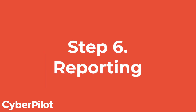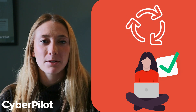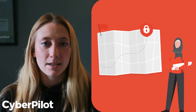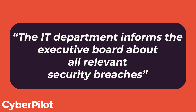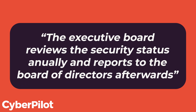Step six: reporting. Establishing a clear reporting process for security issues is key to ensuring the safety of your organization's data. By having a proper reporting process in place, you create a positive feedback loop in your IT security work. In this step, you highlight areas of responsibility, ensure progress toward objectives, and guarantee that everyone knows their responsibilities. Examples include: the IT department informs the executive board about all relevant security breaches; the status of waivers is included in the IT department's annual report; and the executive board reviews the security status annually and reports to the board of directors.